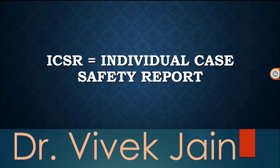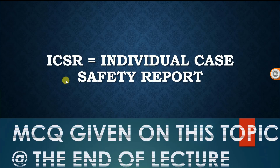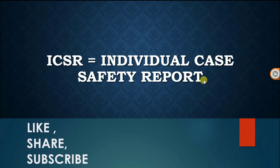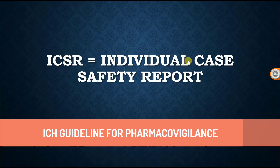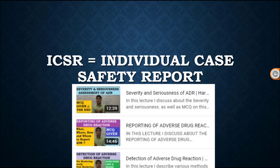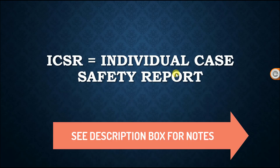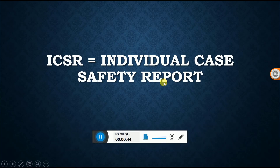Hello everyone, welcome to the channel Tutor Box. In today's class I am going to discuss ICSR, that is Individual Case Safety Report. This is another lecture of pharmacovigilance Unit 4, particularly from the ICH guideline for pharmacovigilance. You can go through previous lectures and see the pharmacovigilance playlist. At the end of the lecture we have 5 MCQs — solve them and give answers in the comment box. Notes are available in the description box.